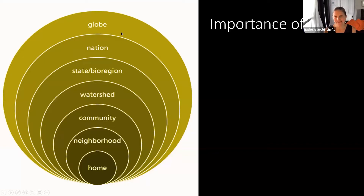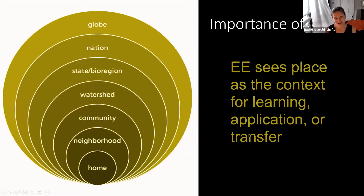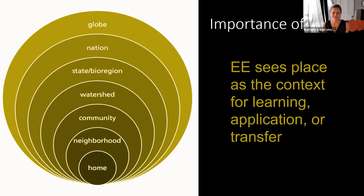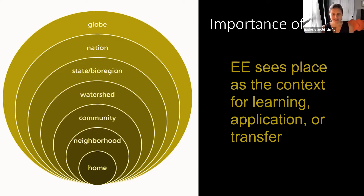Then state, bioregion, nation, and then global. The idea is both really connecting to a specific place but constantly making links between that particular place and global issues. Environmental education sees place as the context for learning, the context for application, and the context of transfer. A very closely related field is place-based education — really becoming grounded in place is a really important component of environmental education. Place is the central fulcrum around which all of this learning takes place.